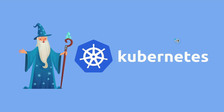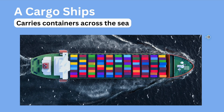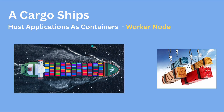Welcome again to my YouTube channel. In this video we are going to learn the basic concepts of Kubernetes and how Kubernetes works. We are going to take a real life example with cargo ships. This is the architecture of Kubernetes — the main components are the master node and worker node. A worker node hosts applications as containers, similar to how cargo ships carry containers across the sea.